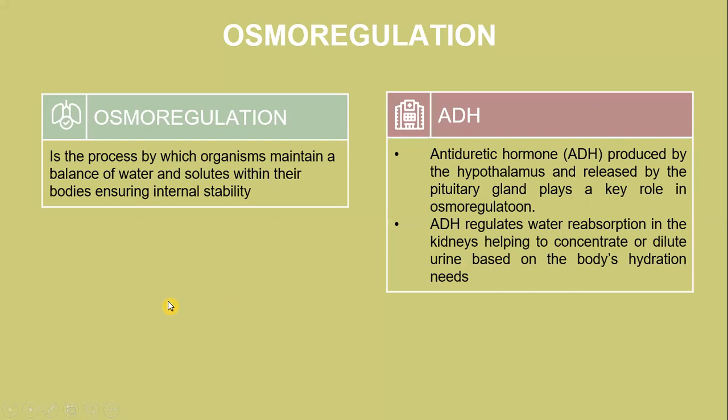Osmoregulation is a process by which organisms maintain a balance of water and solutes within their bodies, ensuring internal stability. ADH, the antidiuretic hormone, is produced by the hypothalamus and released by the pituitary gland, playing a key role in osmoregulation.